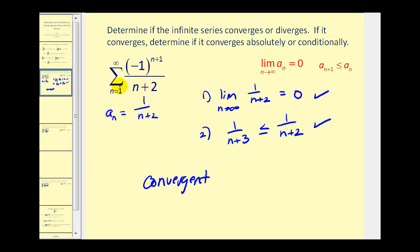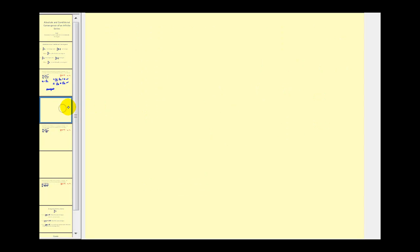Now I want to determine if this series is absolutely convergent or conditionally convergent. We'll take a look at the summation of the absolute value of this, so we'll just have the summation of one over n plus two. If this series converges, then the original series is absolutely convergent, and if this series diverges, then the original series is conditionally convergent. To determine if this series is convergent or divergent, let's use the integral test.